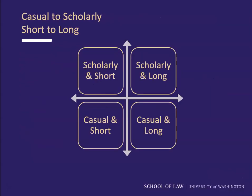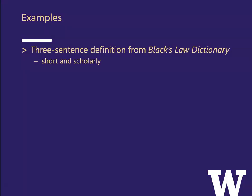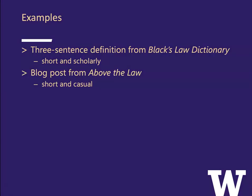Here's a matrix where we consider just two of those dimensions: casual to scholarly along one axis, and short to long along another. So we could have things that are scholarly but short, scholarly and long, casual and short, or casual and long. For example, a three-sentence definition from Black's Law Dictionary is very short and it's scholarly.